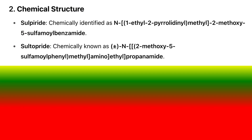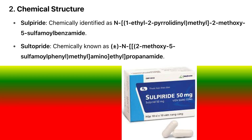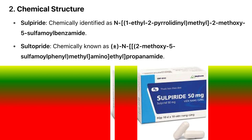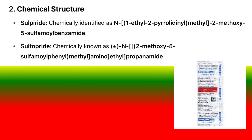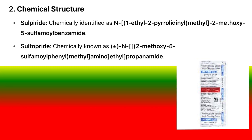2. Chemical structure: Sulpiride is chemically identified as N1-ethyl-2-pyridinyl-methyl-2-methoxy-5-sulfamoyl-benzamide. Sultopride is chemically known as N2-methoxy-5-sulfamoyl-phenyl-methyl-amino-ethyl-propanamide.